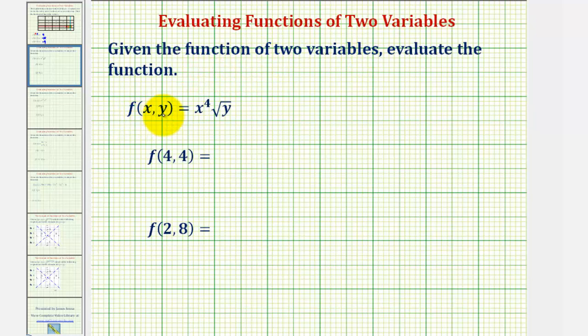Given the function of two variables, f of x comma y equals x to the fourth times the square root of y, we want to evaluate each function or find each function value.